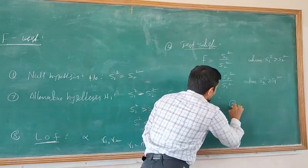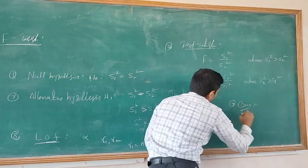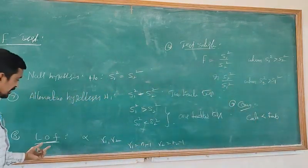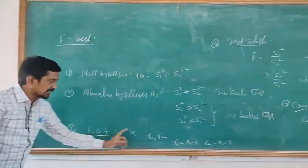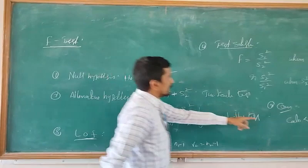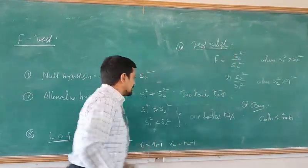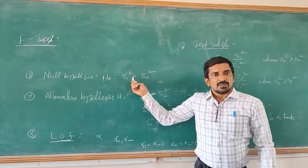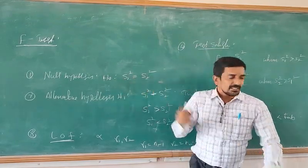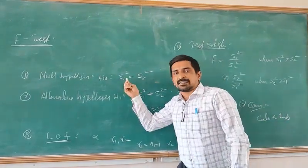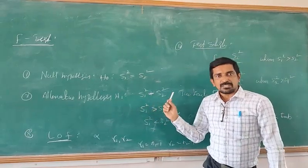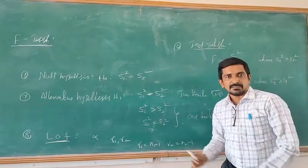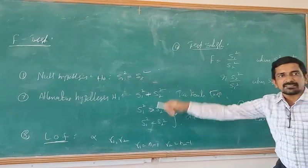Finally, draw a conclusion. If the calculated value is less than the table value, then H0 is accepted — meaning there is no difference between the two variances. If the calculated value is greater than the table value, then H0 is rejected and the alternate hypothesis is accepted. In a two-tailed test, H1 states the variances are not equal.